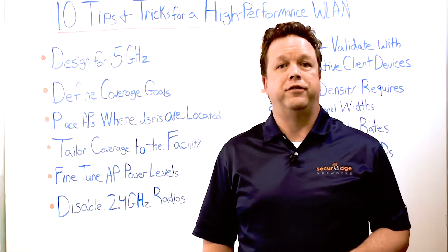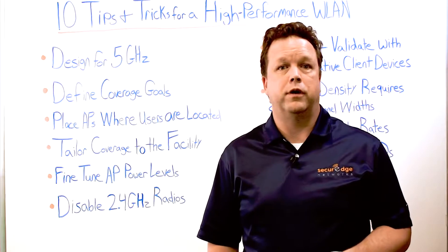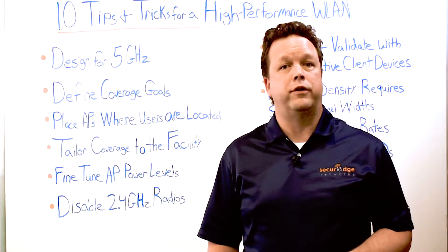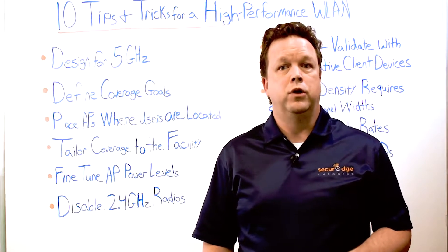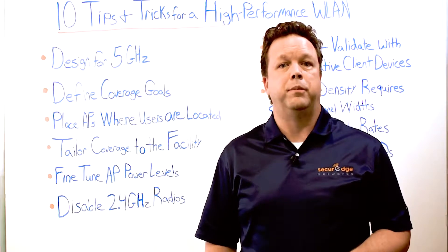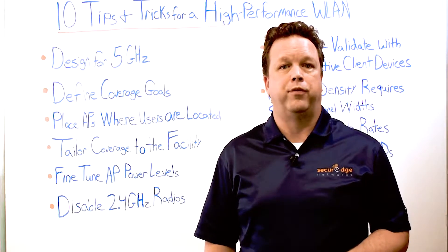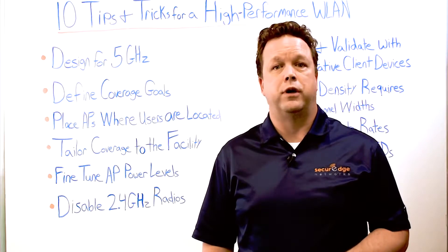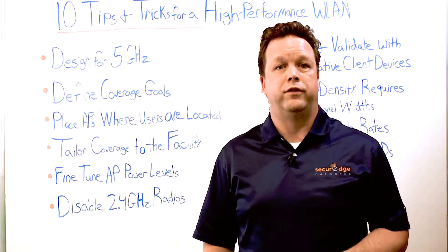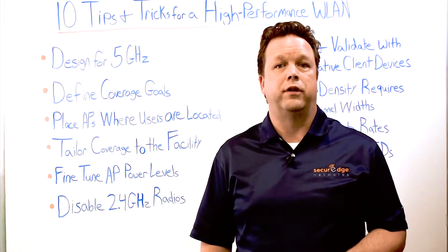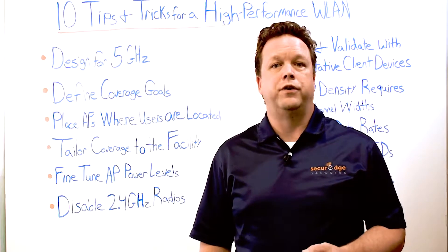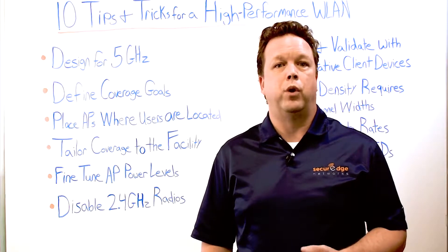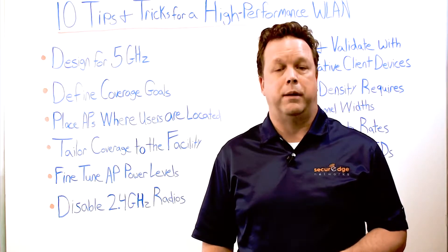Another tip is to define your coverage goals. Coverage that is too aggressive can lead to co-channel and even adjacent channel interference or contention. Too conservative and the result can be poor client performance due to inadequate signal strength and RF deficiencies in areas. A signal strength of -67 dB is the current standard to target in support of low power mobile devices like phones and tablets.